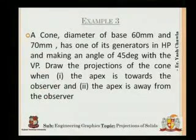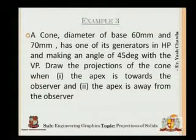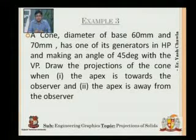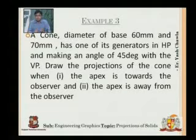The third question for today is: a cone, diameter of base is 60 mm and 70 mm height, has one of its generators in HP and making an angle of 45 degrees with the VP. Now listen carefully and read carefully, there are two conditions in this question. The apex is towards the observer, that is the first condition, and the second condition is the apex is away from the observer.